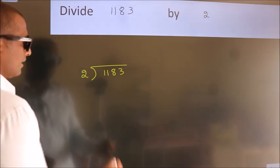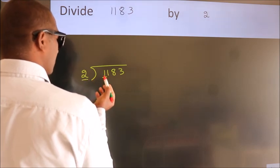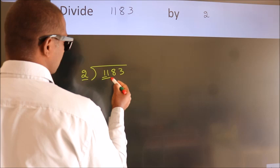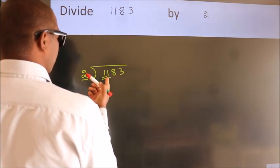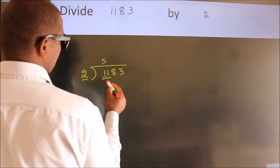Next, here we have 1, here 2. 1 is smaller than 2, so we should take 2 numbers: 11. A number close to 11 in the 2 table is 2 times 5 equals 10.